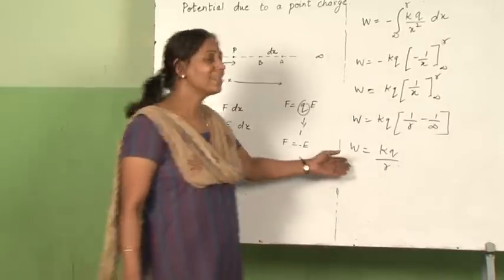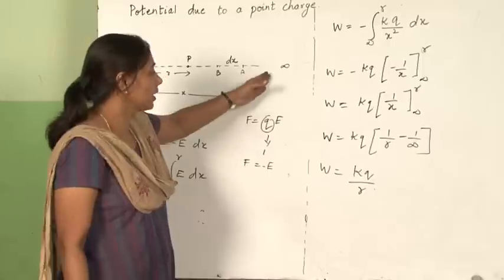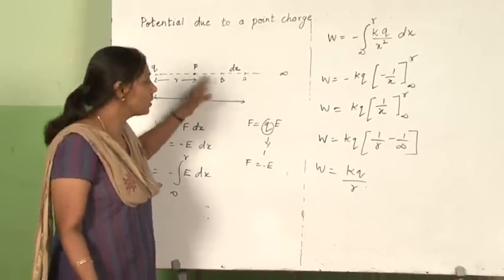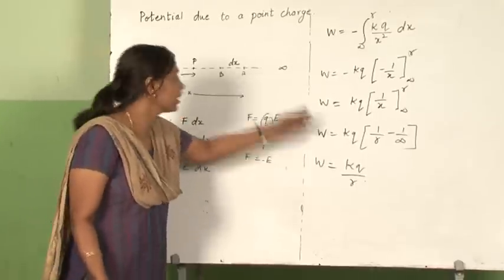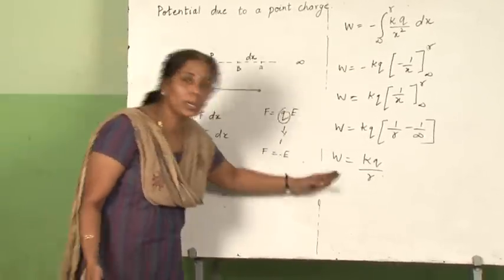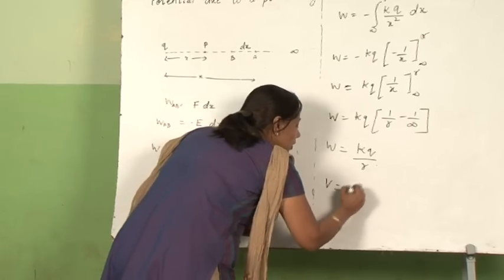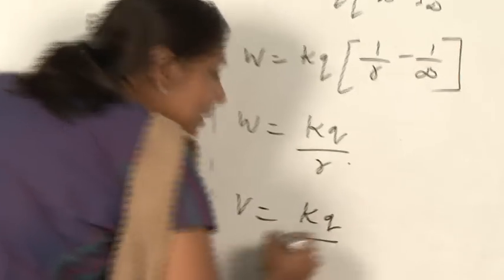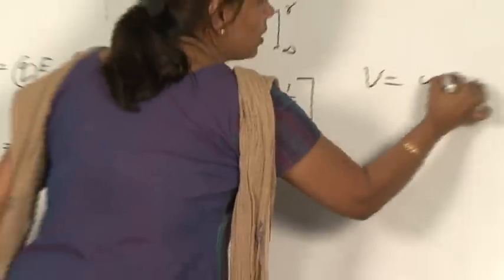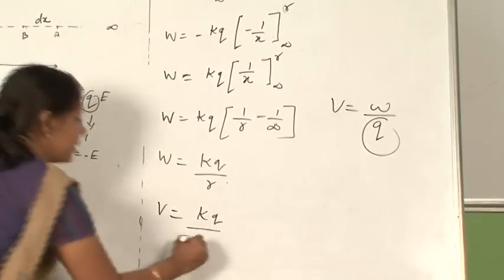So, what is this work done? It is nothing but the potential. This total work done will be the potential at a point P, because it is the amount of work done to bring a unit positive charge from infinity to this point. So, this work done in this case will be a potential. The actual formula is V is equal to work done upon the charge. Here charge is a unit charge.